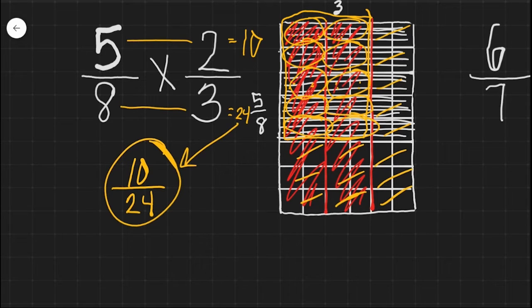Now if we simplify this, we need to find a number that goes into both ten and twenty-four. Simplifying is not always necessary but it is also good to know what to do. A number that can easily go into ten and twenty-four is the number two. So we are going to divide ten by two and we are going to divide twenty-four by two.